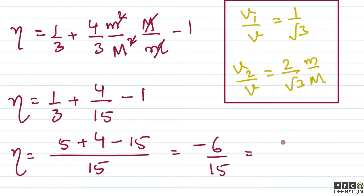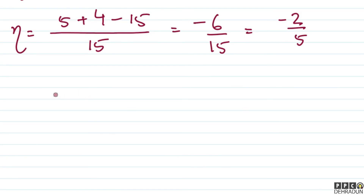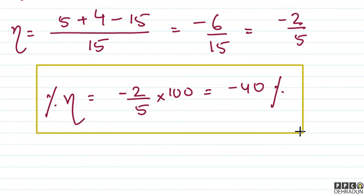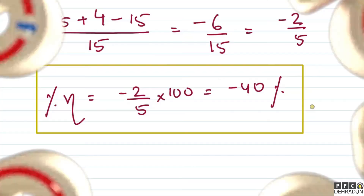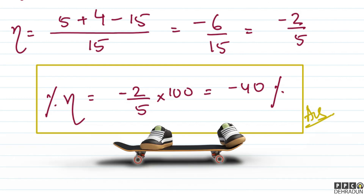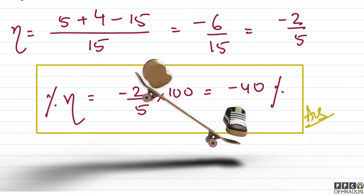So in percentage, eta equals minus 2 by 5 into 100, which gives minus 40 percent. This tells us that the kinetic energy of the system decreased after the collision, and it decreased by 40%. This is our final answer. I hope you understood this solution well. In case any doubt remains, feel free to contact me — I'll be very happy to help. Take care, bye bye.